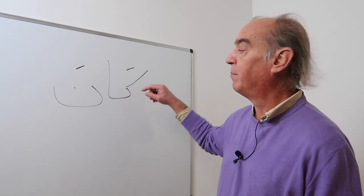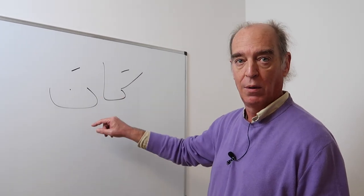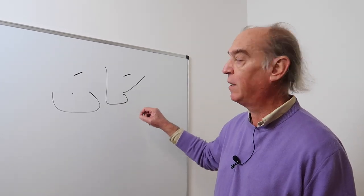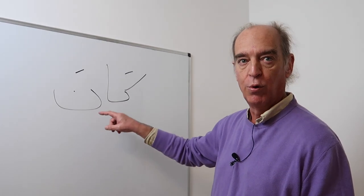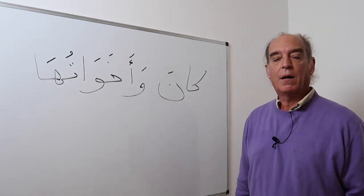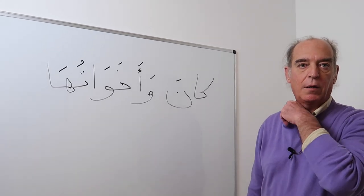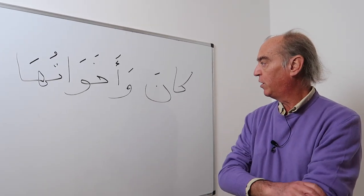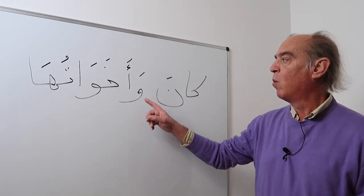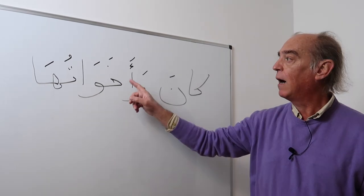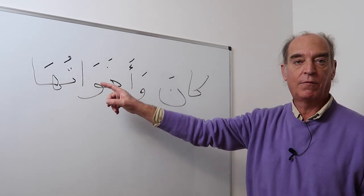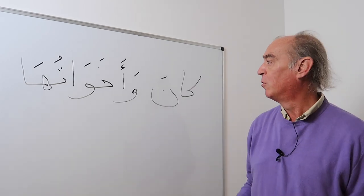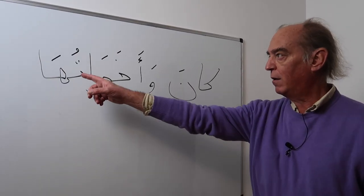Kana in the present is yakunu. So the real root of this verb is kaf-waw-nun. There are other verbs which follow the same rules as kana, and these are called kana wa akhawatuha. Akhawat is the plural of ukht, meaning sister. So: kana and her sisters.